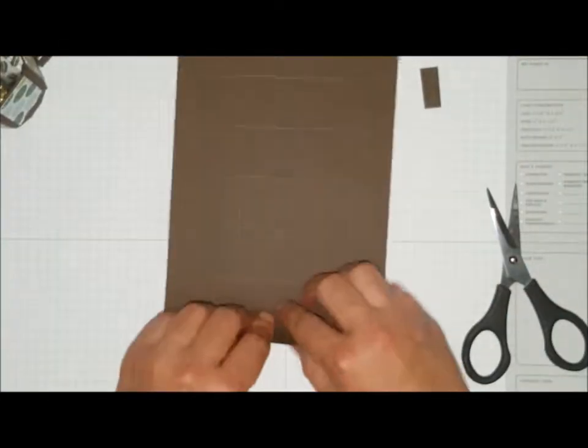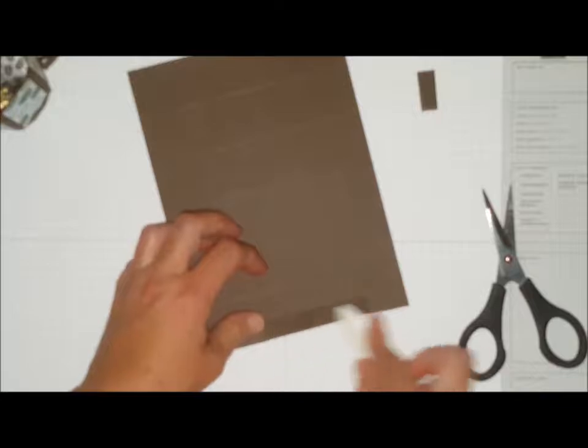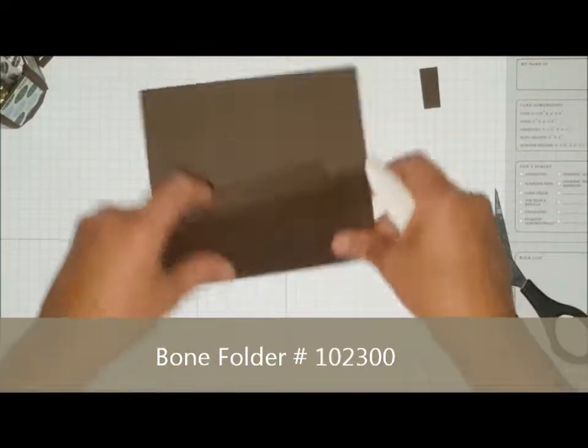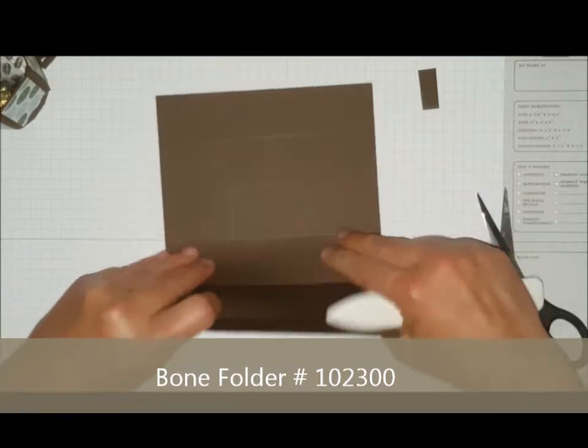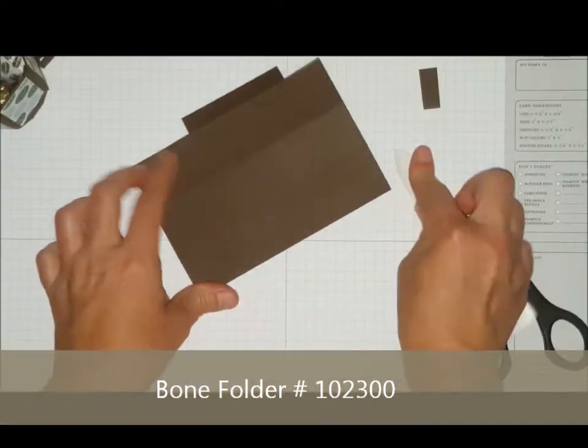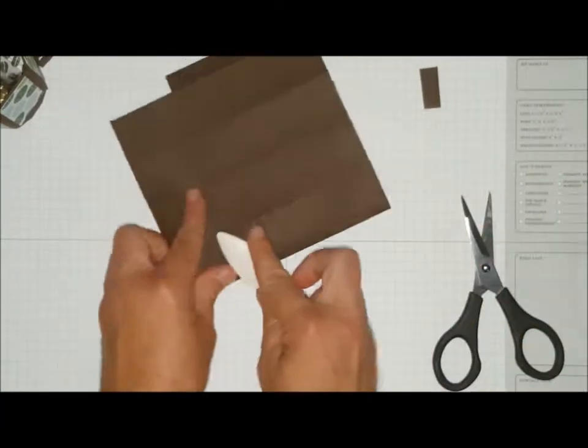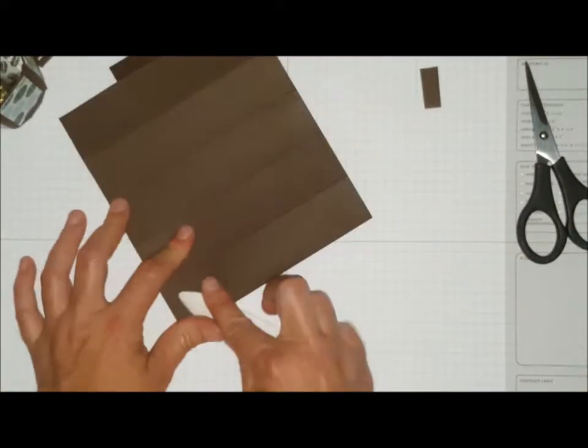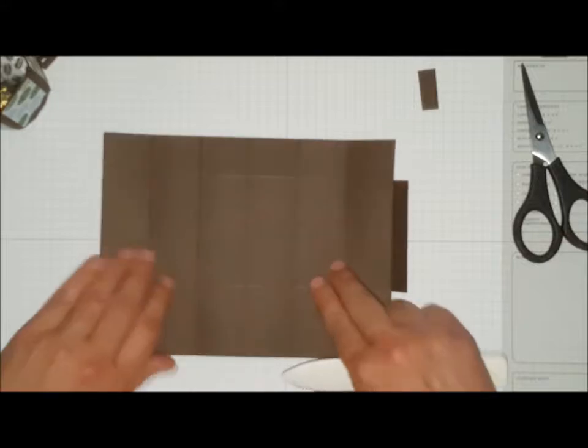What I'm going to do now is enforce all my score lines using my bone folder to give it a nice crisp edge.